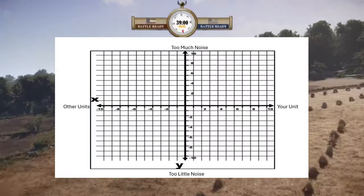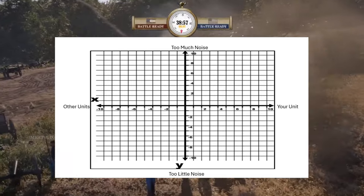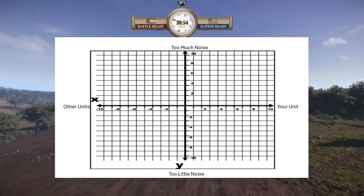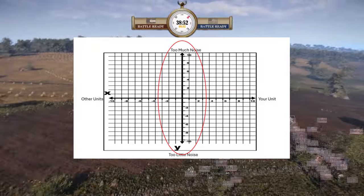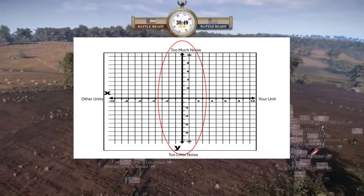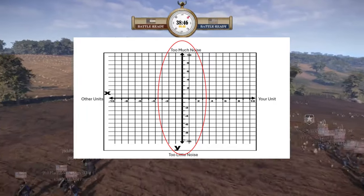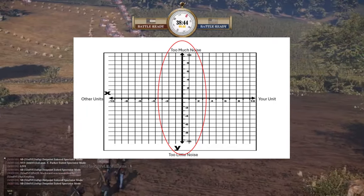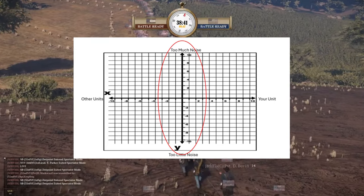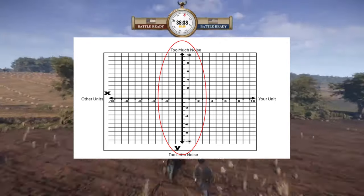To begin with, I want to draw your attention to this graphic of an X and Y axis to help illustrate communications from a unit commander's perspective. First, let's take a look at the Y axis, which displays the level of communication occurring, with an optimal occurrence represented at zero. The bottom of the graphic represents too little or no communication, in which case no information is being transmitted.